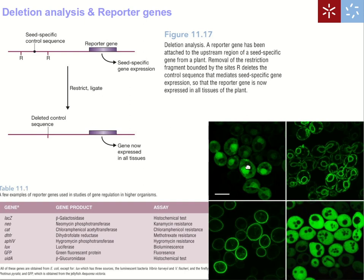GFP is a very nice example of a reporter gene. It is used in this context but also to localize proteins inside cells. Since GFP is fluorescent by itself, it doesn't require any added substrates — you simply shine light on the cell and observe the fluorescence. Shown here are yeast cells (Saccharomyces cerevisiae) with a GFP-tagged protein located in the membrane, in the nucleus, in the nuclear membrane, and in the cytosol.